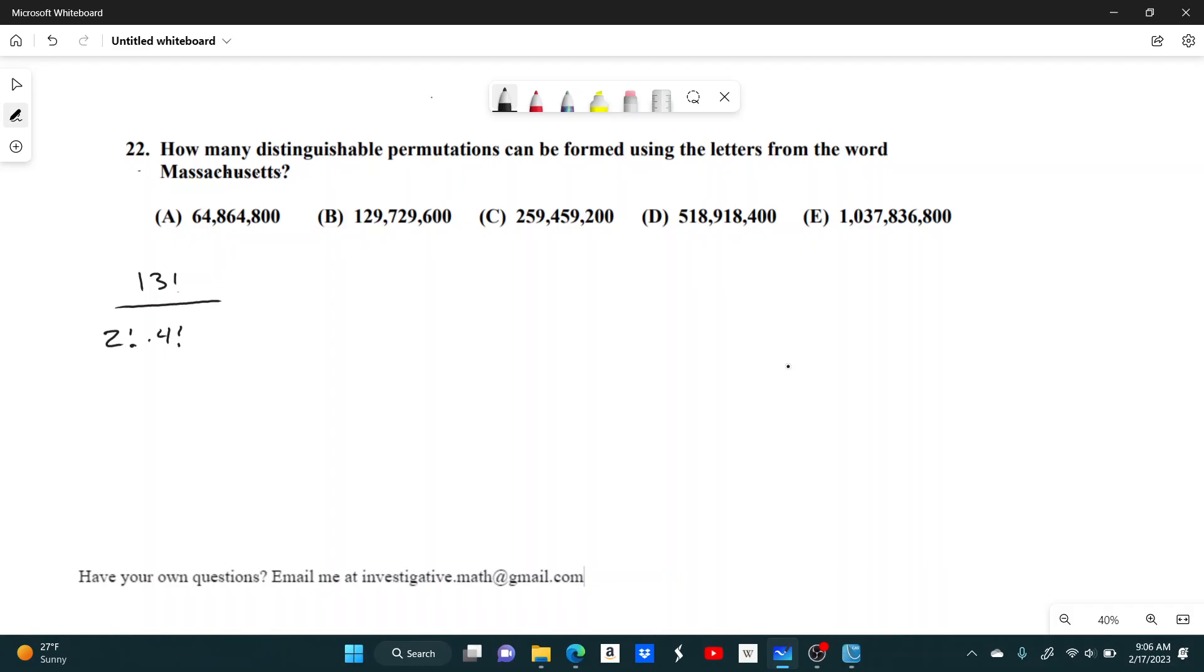So, next we look at, we already looked at a's. C's, we don't have any repeating c's. No repeating h's. No repeating u's. Already looked at s's. No repeating e's. But we have 2 repeating t's. So, then we divide by 2 factorial again.